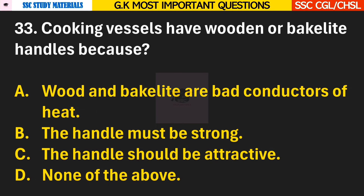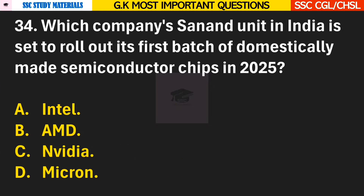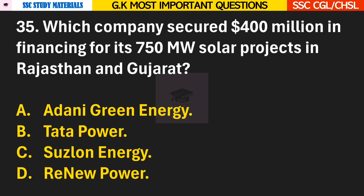Question 33: Cooking vessels have wooden or bakelite handles because? Answer A — wood and bakelite are bad conductors of heat. Question 34: Which company's unit in India is said to roll out its first batch of domestically made semiconductor chips in 2025? Answer D — Micron. Question 35: Which company secured Rs. 400 million in financing for its 750 MW solar projects in Rajasthan and Gujarat? Answer A — Adani Green Energy.